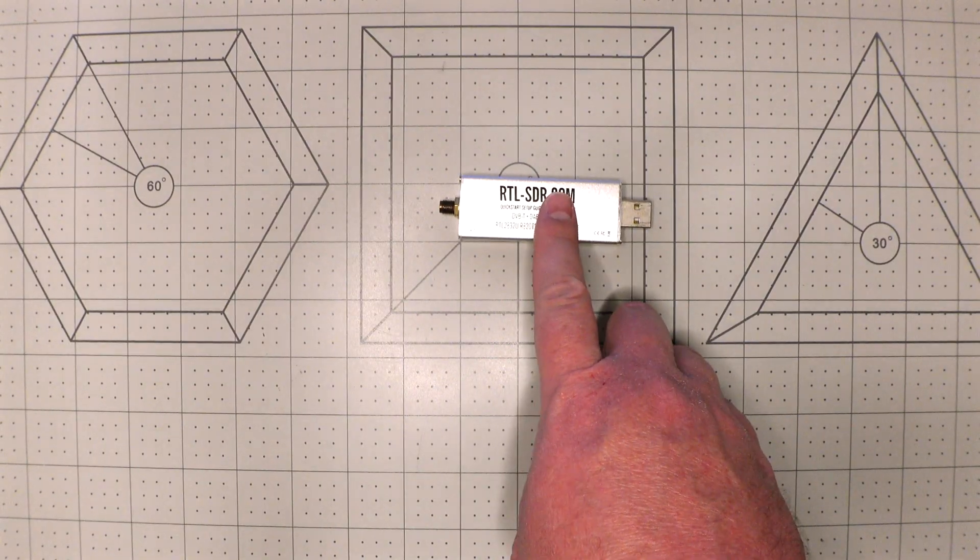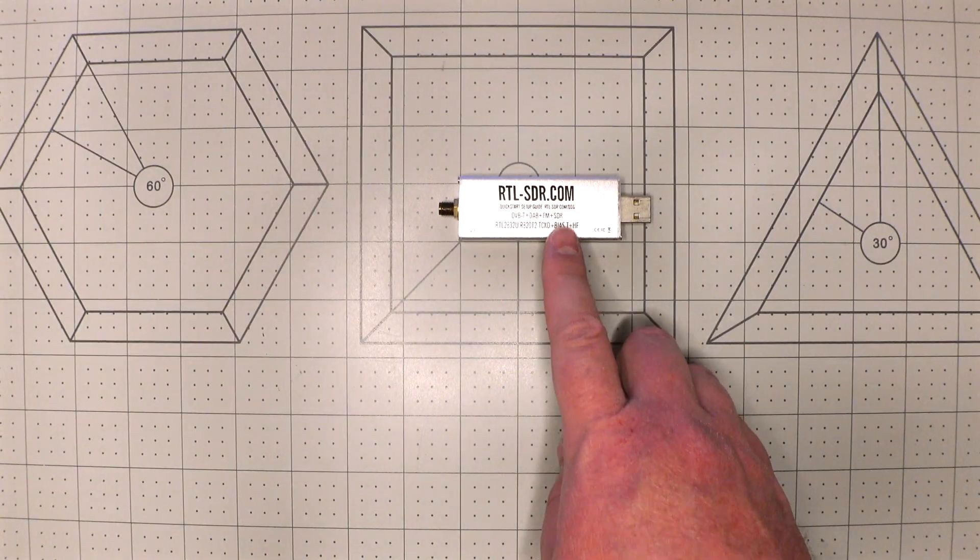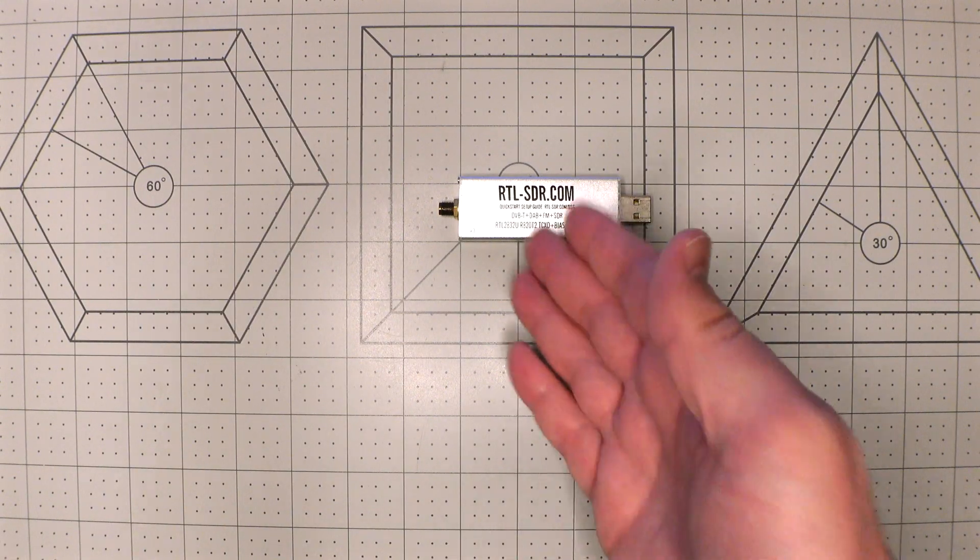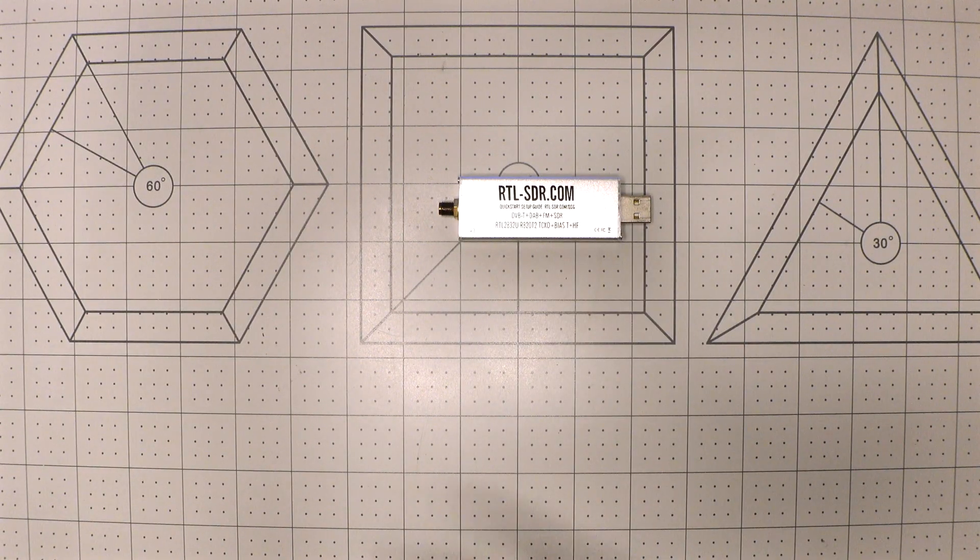While technically it could pick up shortwave, it wasn't very good at it. You had to use a program called SDR Sharp, and then you had to enable direct sampling. It wasn't really built to pick up HF or shortwave signals in that range of the radio spectrum. While it could work, I knew that I wanted to move on to something else.